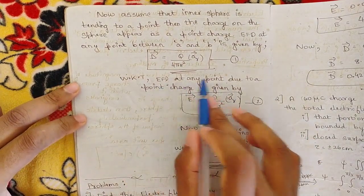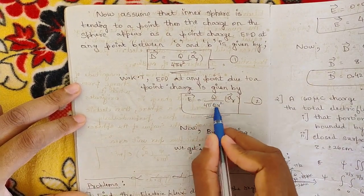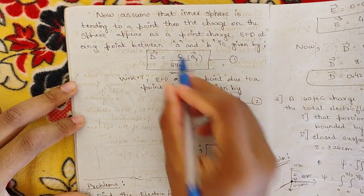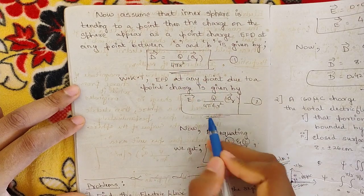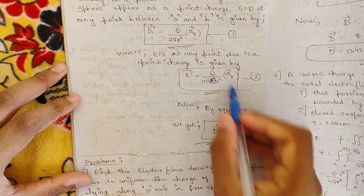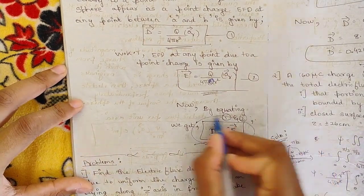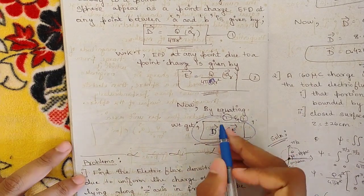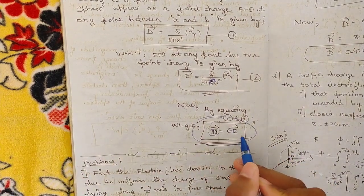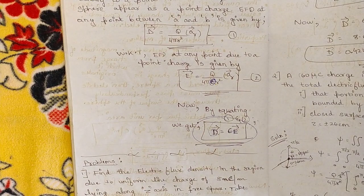We know that the electric flux density at any point due to a point charge is also given by E equals Q divided by 4 pi epsilon r squared times a_r. Comparing these two equations, the common term is Q divided by 4 pi r squared times a_r. The only difference is the factor epsilon, so by equating, we get the important relation D equals epsilon times E.